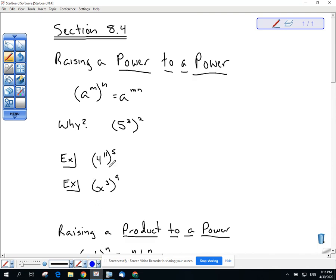The reason for that, 5 to the 3rd to the 2nd, for example. Well, 5 to the 3rd is like saying 5 times 5 times 5. And when I raise something to the 2nd power, it means multiplied by itself. So that's like saying 5 times 5 times 5 times another one of those things, 5 times 5 times 5, which we know to be 5 to the 6th.